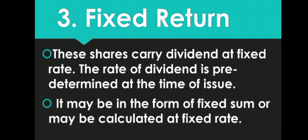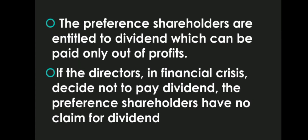Fixed returns: These shares carry dividend at a fixed rate. The rate of dividend is predetermined at the time of issue. It may be in the form of a fixed sum or calculated at a fixed rate — for example 20%, 10%, or 5%, or a fixed amount like 500 or 1000 rupees. The preference shareholders are entitled to dividend which can be paid only out of profit.